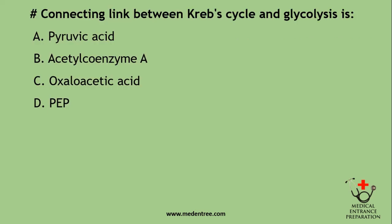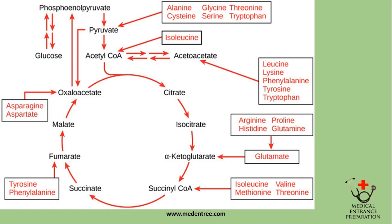The connecting link between the Krebs cycle and glycolysis is: pyruvic acid, acetyl coenzyme A, oxaloacetic acid, or PEP (phosphoenolpyruvate)? The correct answer is acetyl coenzyme A. Acetyl coenzyme A connects glycolysis (prior to the acetyl coenzyme A step) and the subsequent circular Krebs cycle.